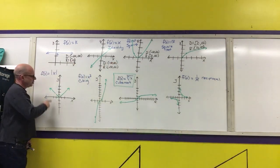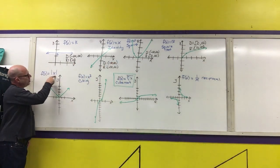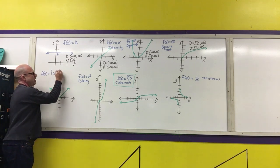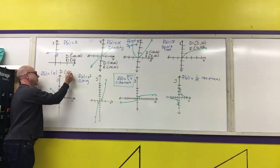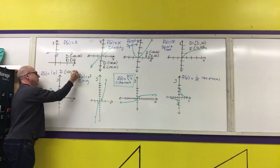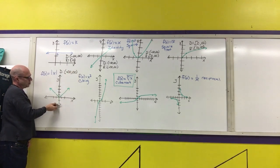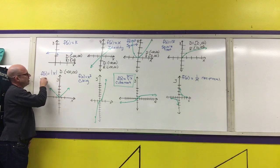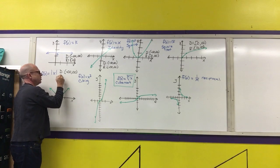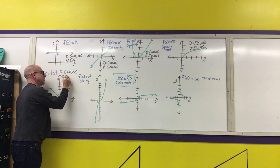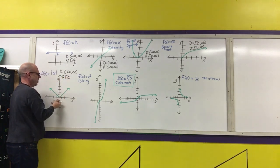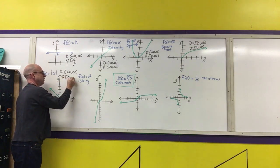For the absolute value function, any real number can be substituted for x, so its domain is all real numbers. The range starts at zero because any negative input is converted to its positive counterpart, so the range is [0, ∞).